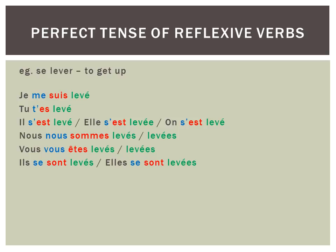There's just one other group of verbs which always use être as the auxiliary — reflexive verbs. They work exactly the same in the perfect tense as other verbs, but you've just got to remember to add the reflexive pronoun. So instead of je suis levé, you've got to remember je me suis levé. Tu t'es levé. Il s'est levé. Elle s'est levée. On s'est levé. Nous nous sommes levé. Vous vous êtes levé. Ils se sont levé. The past participles have to agree — so vous vous êtes levés with an S or ES, ils se sont levés with an S or ES, and so on.